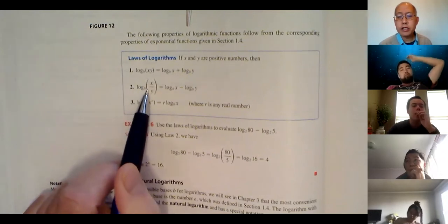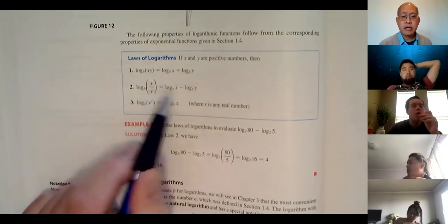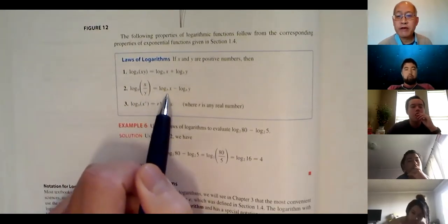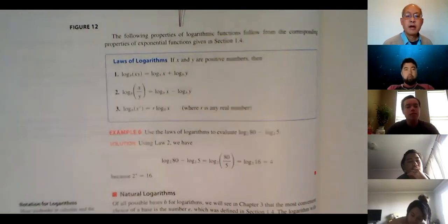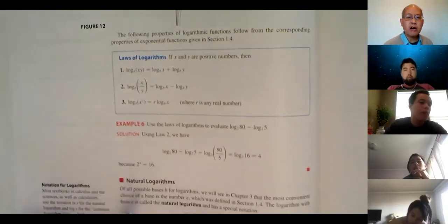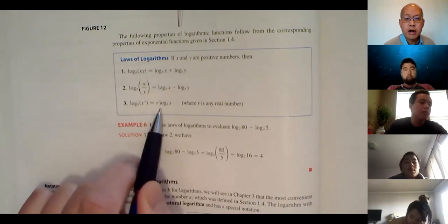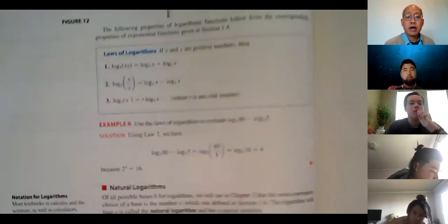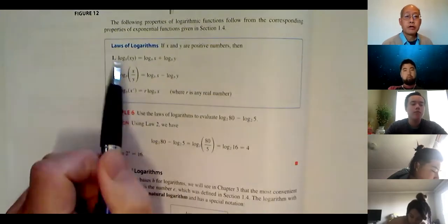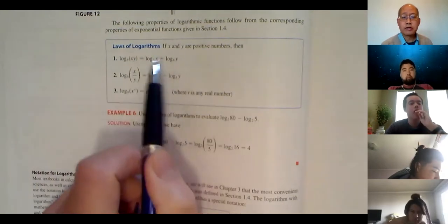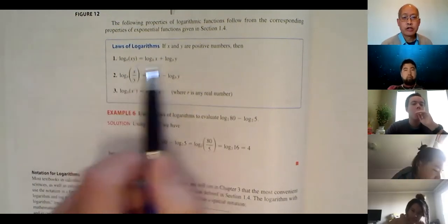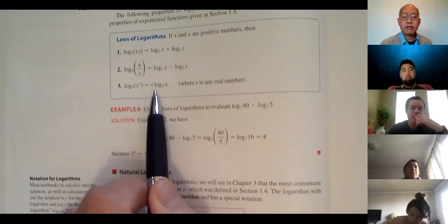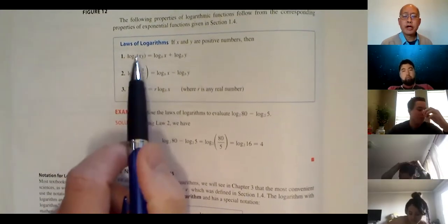The log of a quotient is the difference of the logs — log base b of (x over y) equals log base b of x minus log base b of y. And then the power property: log base b of x to the r — the r gets to come down in front, giving r times log base b of x. All of these laws work in both directions: you can go left to right, but also right to left. So a sum can become a product, a difference can become a quotient, and a coefficient can be brought back up as an exponent.